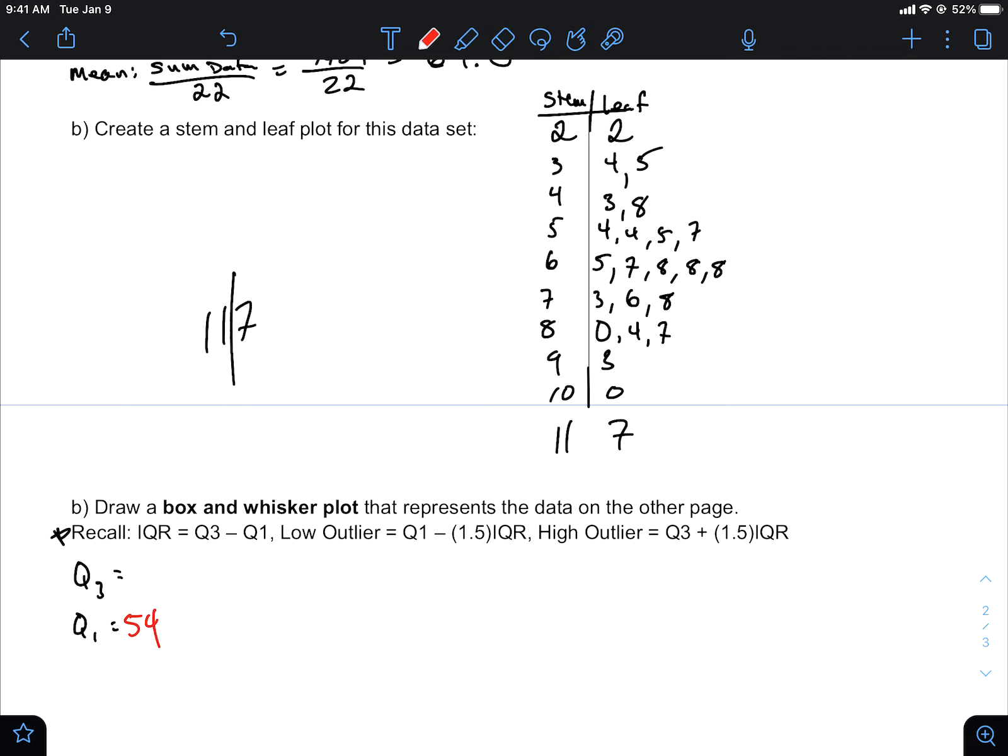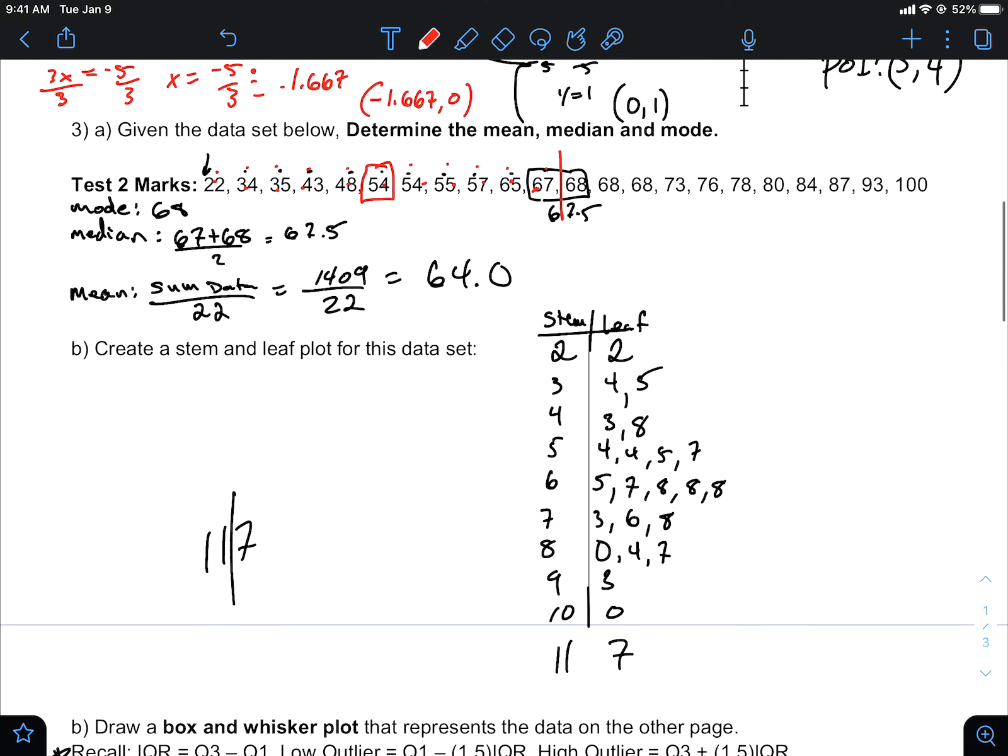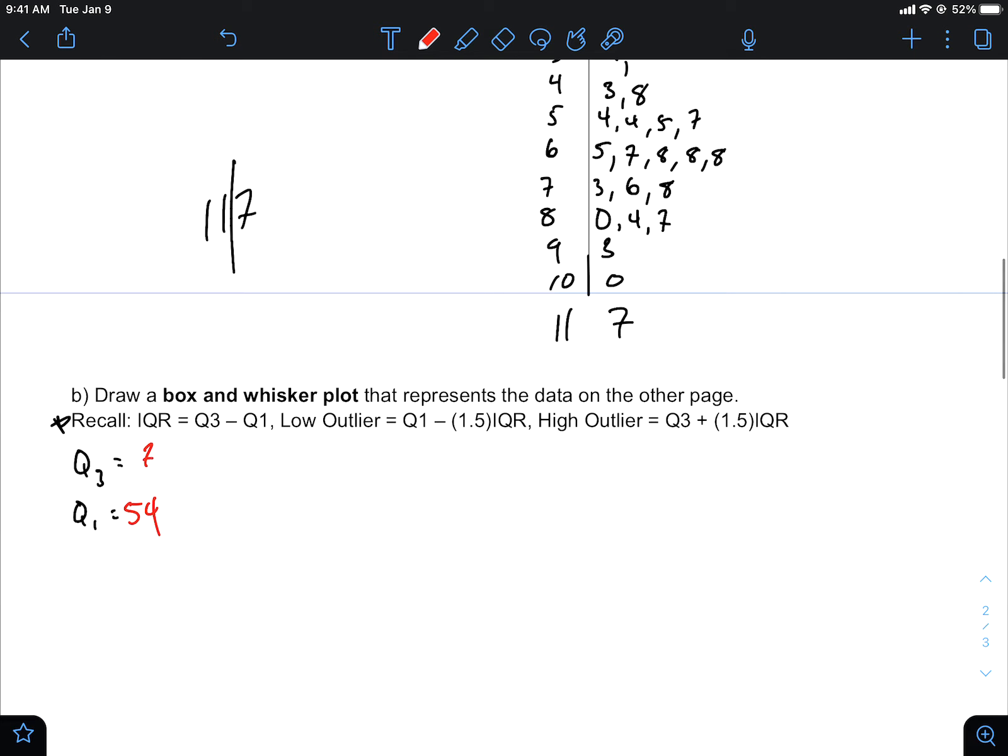And so Q3, you should expect to be, if we look at it, same thing, 1, 2, 3, 4, 5, 6th entry, 1, 2, 3, 4, 5. So 78 would be the upper quartile. And then because we know we need it, I would find the interquartile range, how far apart are those middle, the middle of the data, upper and lower quartiles. Well IQR is going to equal Q3, so 78 take away 54, which should be 24.